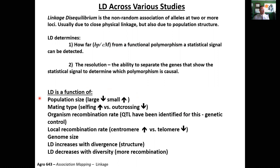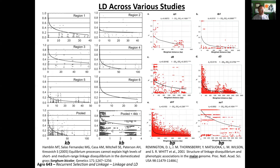I'll show an example contrasting sorghum and maize, which are two very close relatives. The recombination rate, which we have little ability to accurately measure, is a genetically inherited trait. The more recombination an organism has, the less LD it will have. Recombination does not occur uniformly across the genome: centromeres have really high LD because they don't recombine, while telomeres have low LD because they recombine much more frequently. LD increases with divergence due to population structure and decreases with diversity due to more recombination.